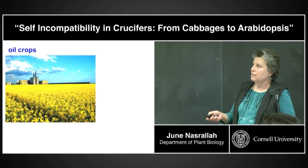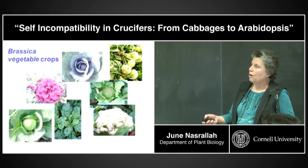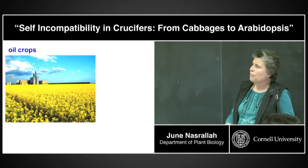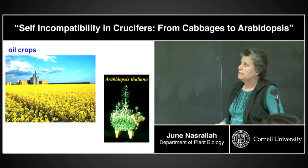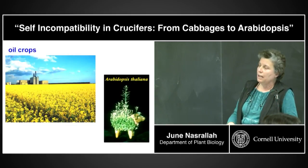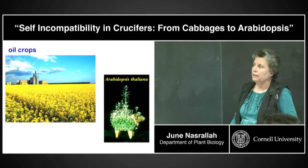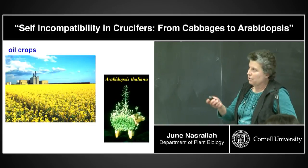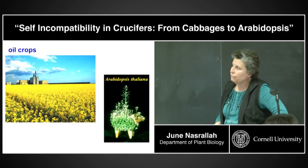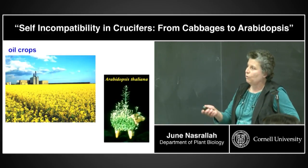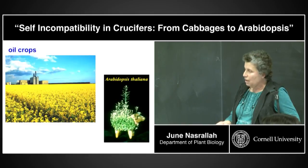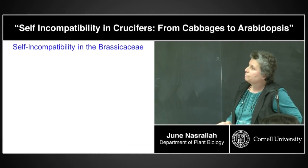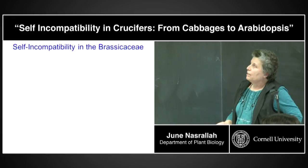These are Brassica vegetable crops and there are oil crops in the Brassicaceae. And of course there is Arabidopsis thaliana, which is the odd man out here because it's fully self-fertile and pretty small, so our graduate students could grow them in chia pets.